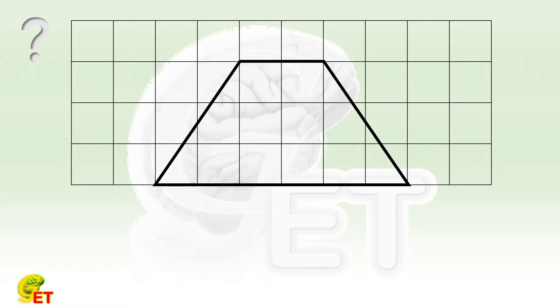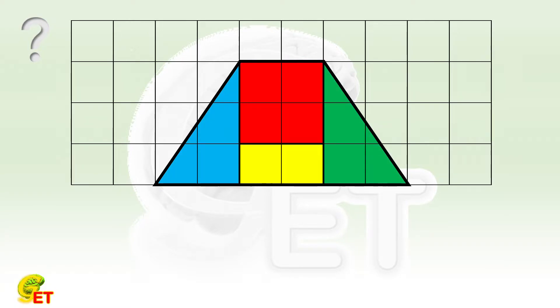There is an isosceles trapezoid as shown. We divided it into 4 pieces: a square, a rectangle, and 2 triangles.